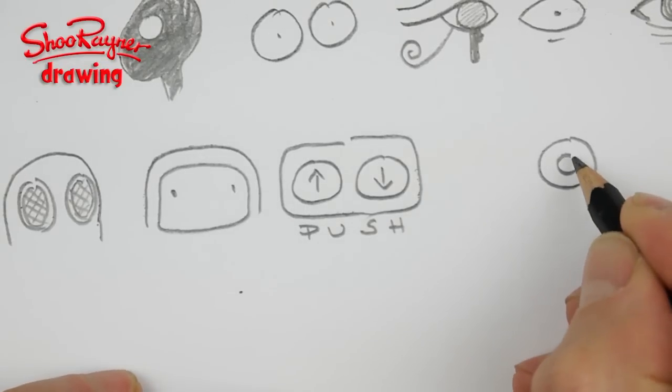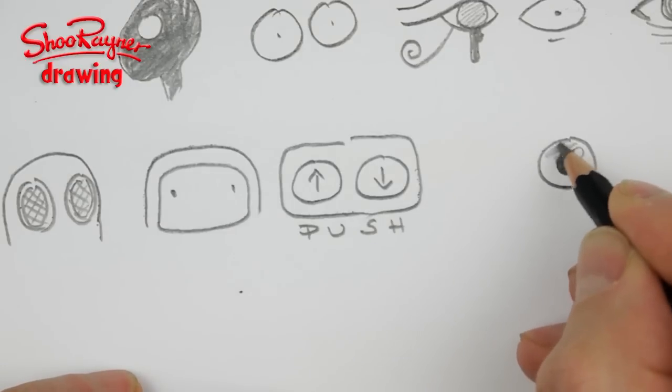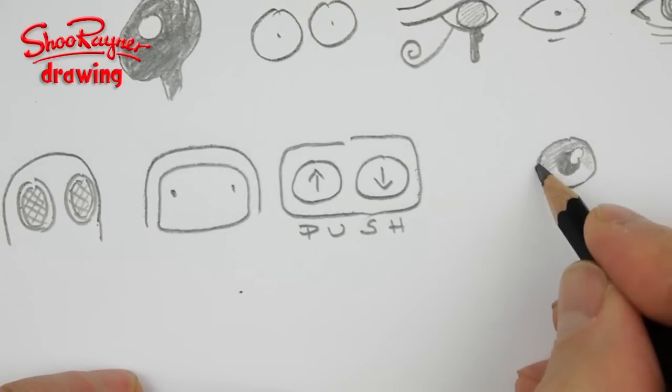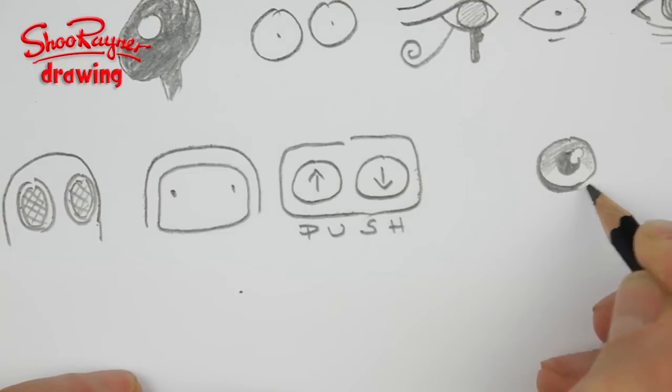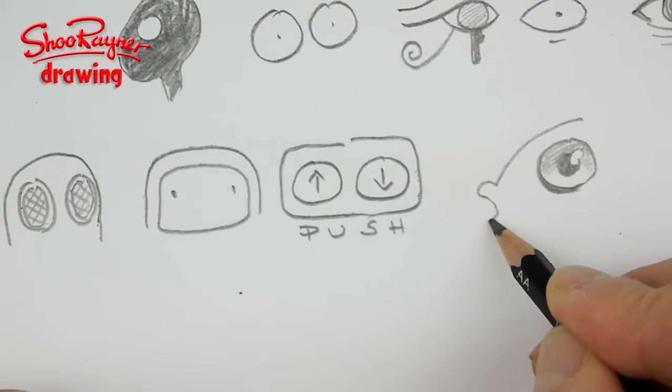The basic eye has a black circle in the middle for the pupil and a little bit taken out of it for the reflection. Add a bit of shading around it and you can put almost any animal head around it teddy bear or fish.